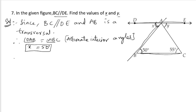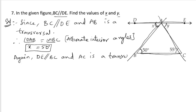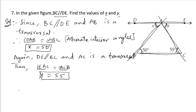Next, for the value of y, BC is parallel to DE and this time we take AC as the transversal. Then angle EAC will be equal to angle ACB because they are alternate interior angles. So angle EAC is y and angle ACB is 55 degrees, giving us y = 55 degrees.